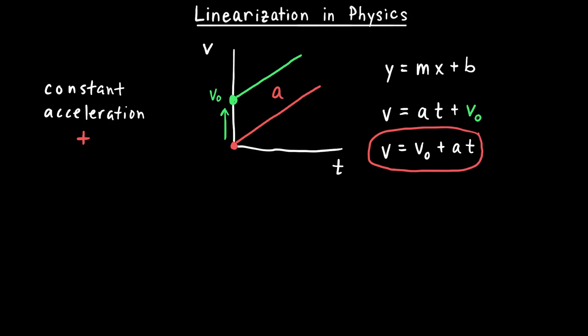Let's take this one step further. Instead I want to look at a graph of the object's position as a function of time. If I graph position as a function of time, again saying the object starts at zero, if something has a constant acceleration you should know that what we end up with for the position versus time graph is a curved line. We can study all sorts of things and learn that the slope of this graph represents the object's velocity, and since the object's velocity is increasing we see the slope increasing.